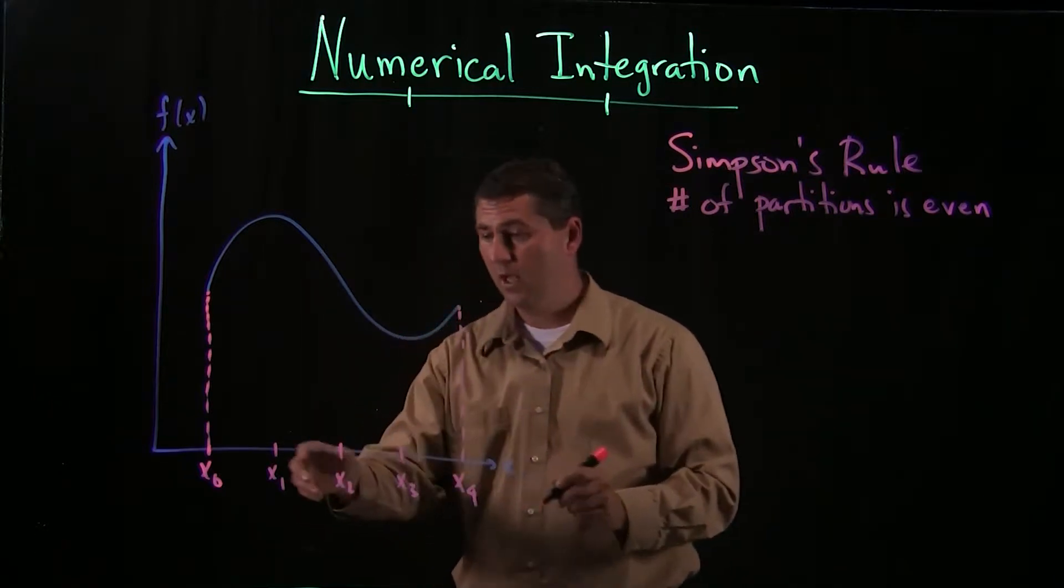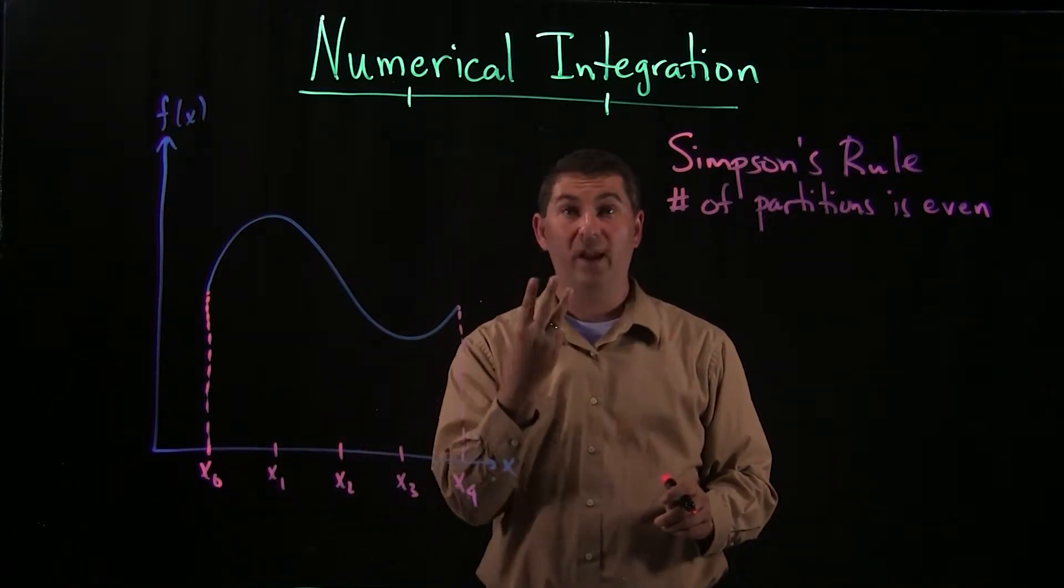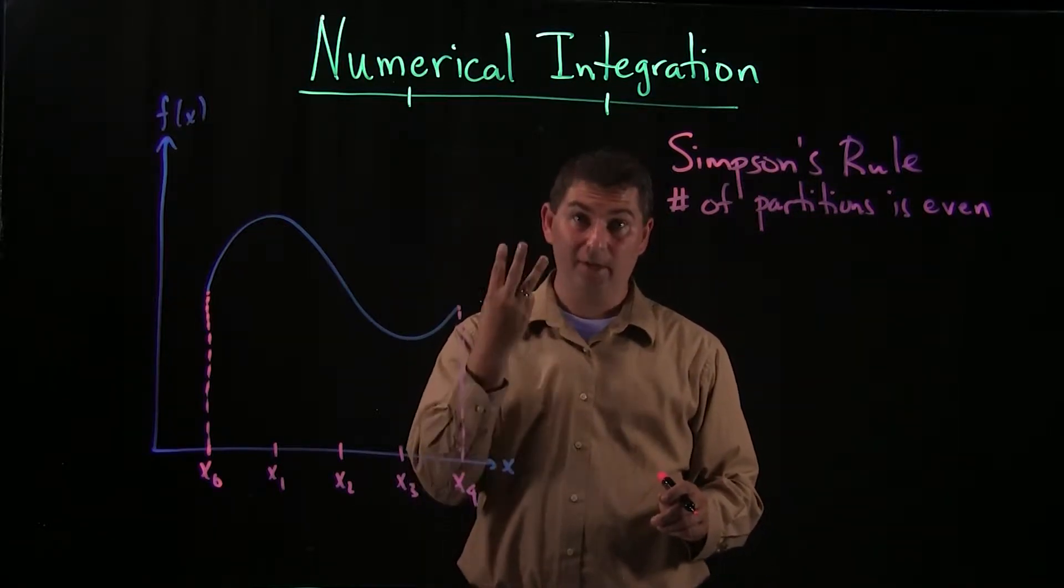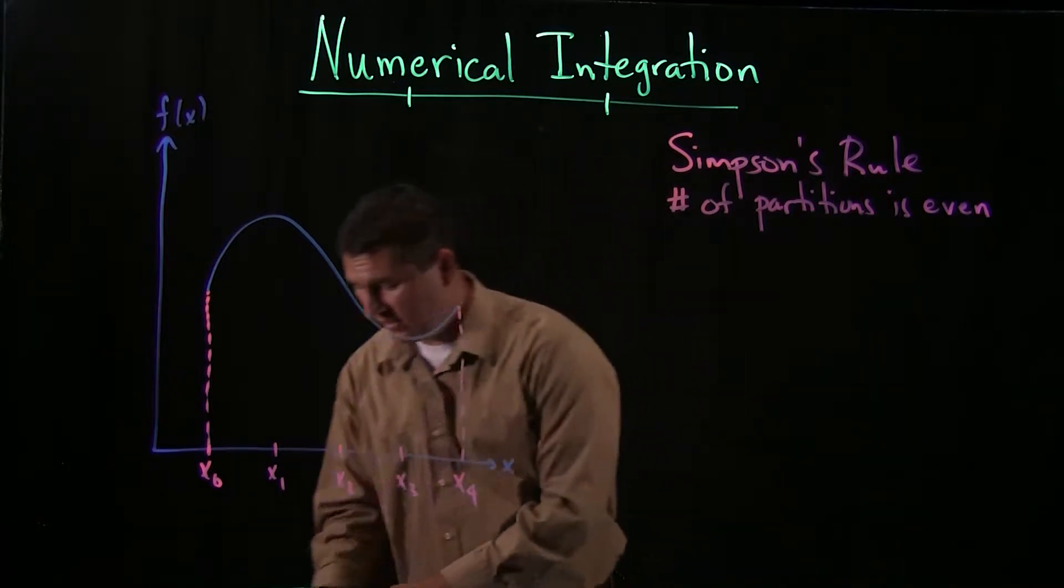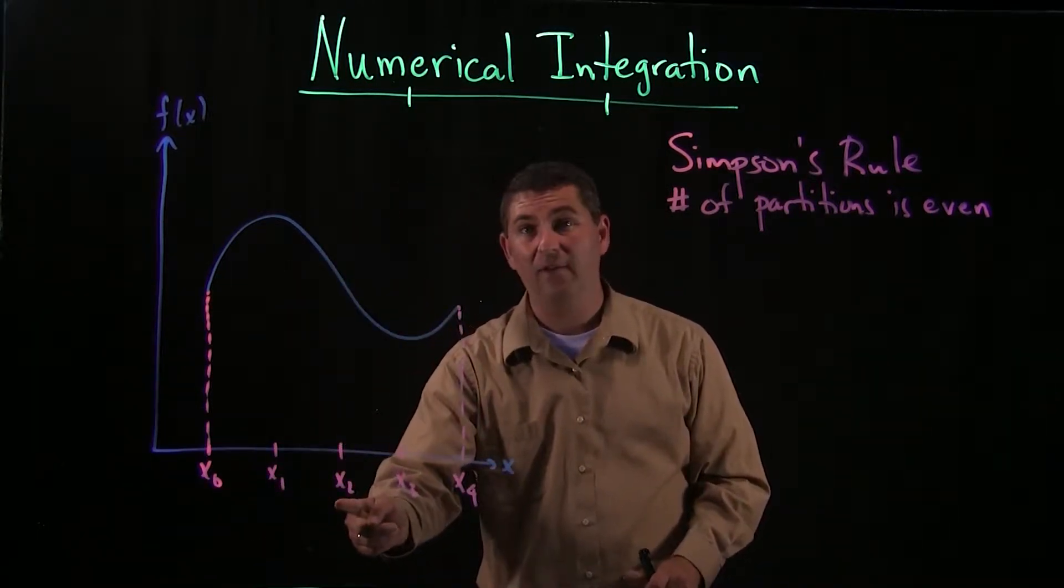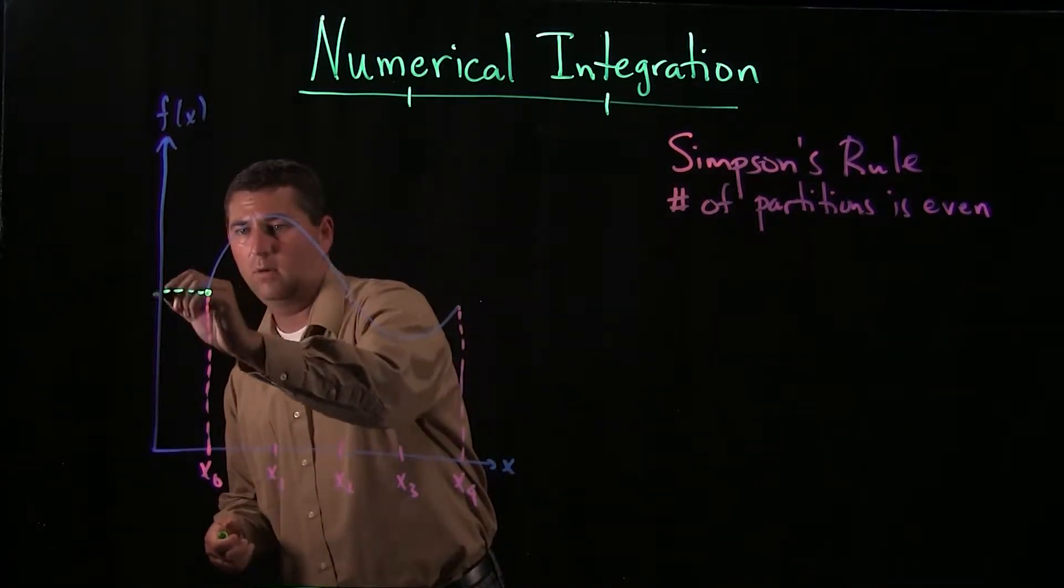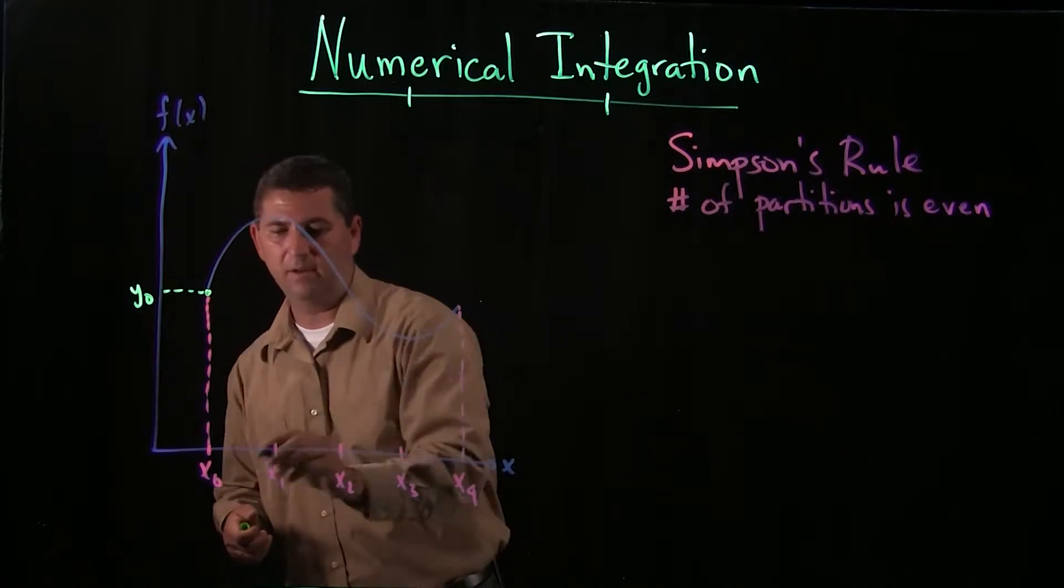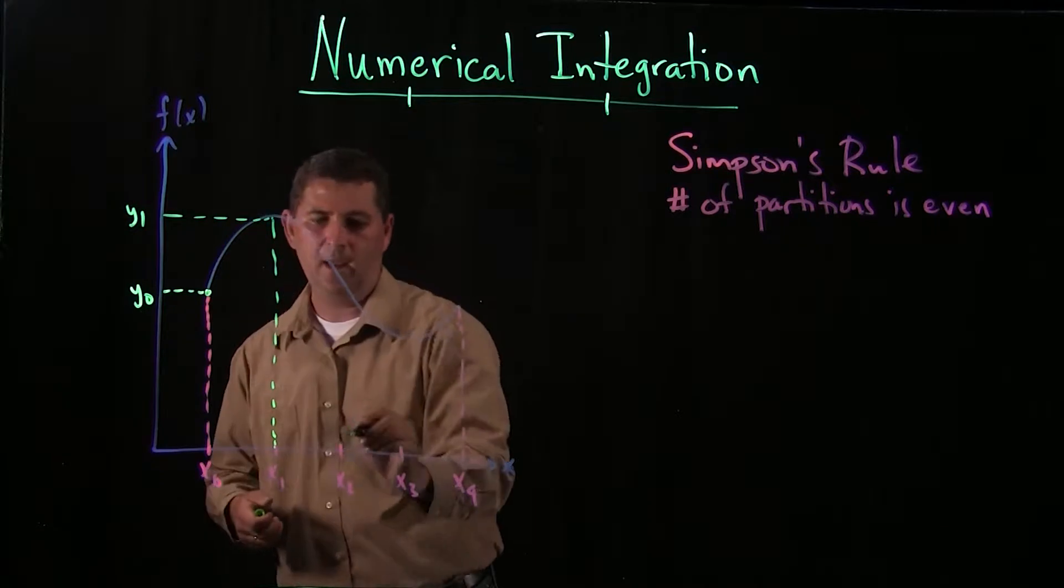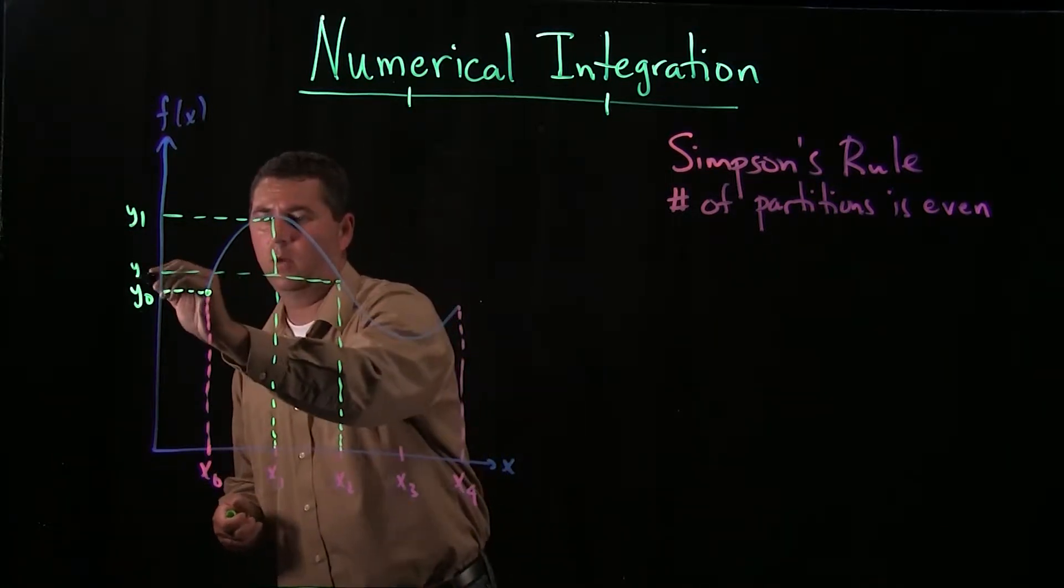We'll see quickly why it is that you need an even number to employ this. So the idea is going to be this: we're going to look at not two at a time, but three at a time. Because if you want to define a parabola, you don't just need two points, you need three points. So I'm going to sample my function at x0, x1, and at x2. So there's my sample at x0, that's my y0. I sample it here at x1 and get my y1, and I'll sample it here at x2 and I'll get a y2.